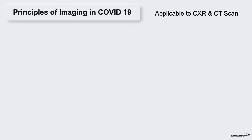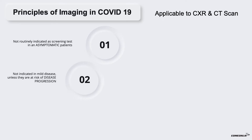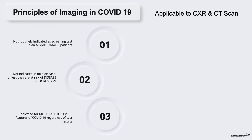Principles of Imaging in COVID-19. These principles are applicable to X-ray chest as well as CT scan. Imaging is not routinely indicated as a screening test for COVID-19 in an asymptomatic patient. Imaging is not indicated for patients with mild features of COVID-19 unless they are at risk of disease progression. Imaging is indicated for patients with moderate to severe features of COVID-19, regardless of COVID-19 test results.